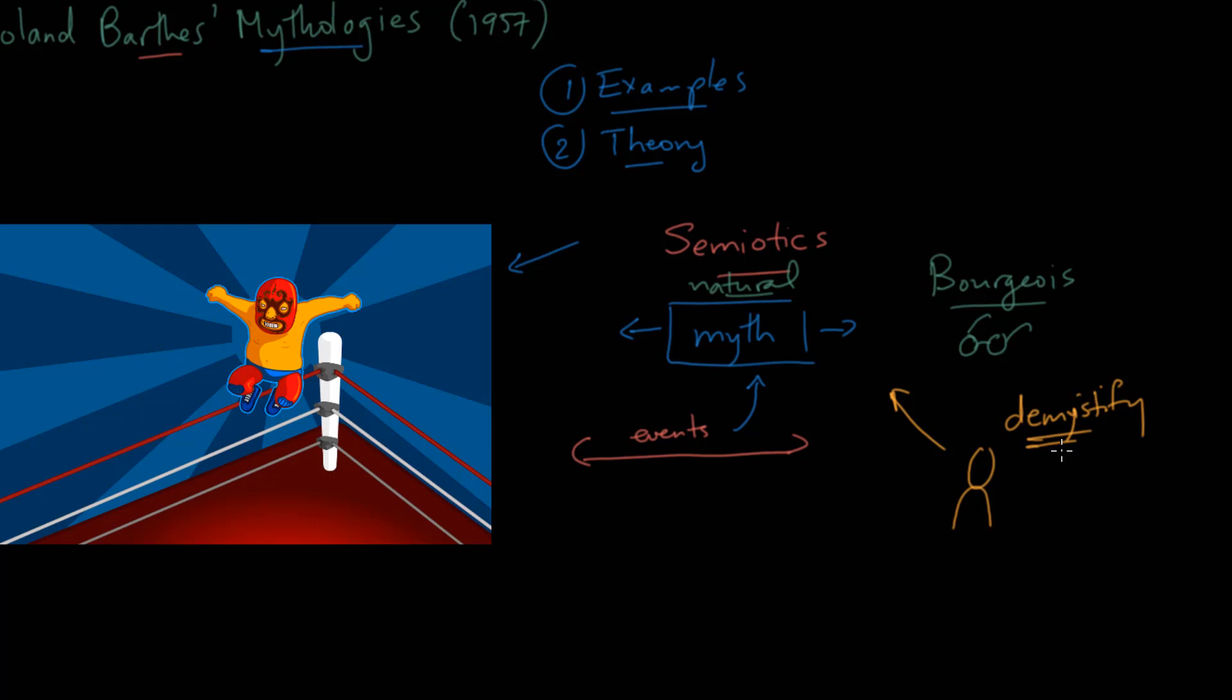Now Barthes is aware that as he is looking at the myth, it's possible that he himself creates new myths. Do we ever really escape this notion of myth? And that raises the question, well what is his mythology? Does he have his own mythology? Does he have his own sign system that we, from our vantage point, then need to understand?